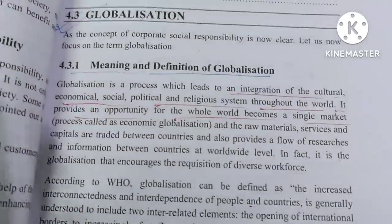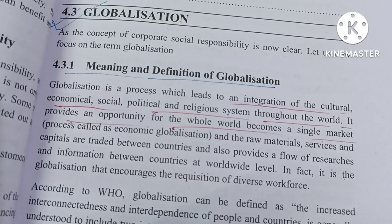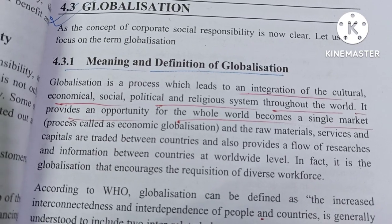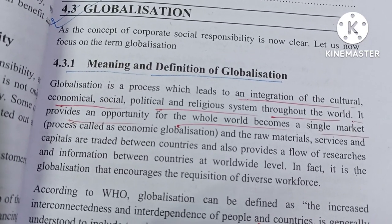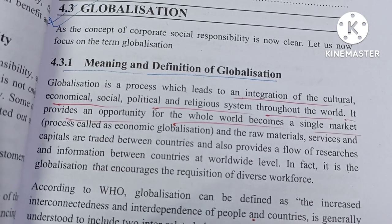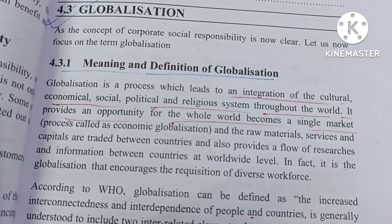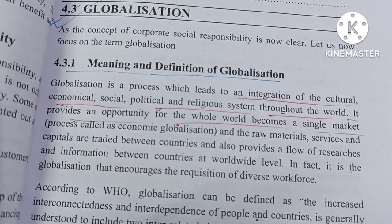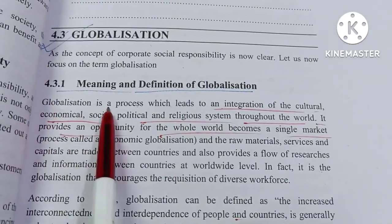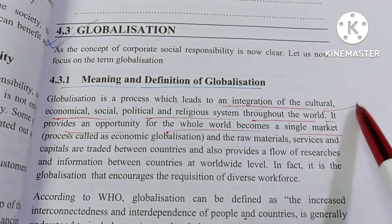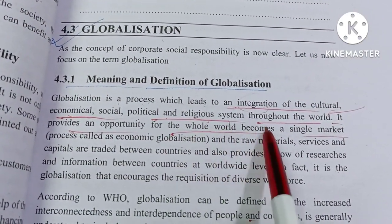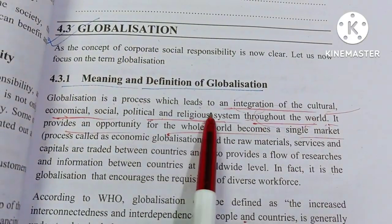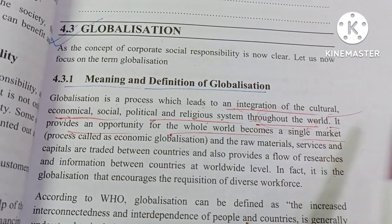For example, in our country, many children are studying abroad in other countries. We are interacting at the international level, maintaining relations, traveling, and receiving tourists. We are exporting many goods from our country and importing many things from different countries. So this is a part of globalization — a process which leads to an integration of the cultural, economic, social, political, and religious systems throughout the world. We integrate, connect, and exchange.